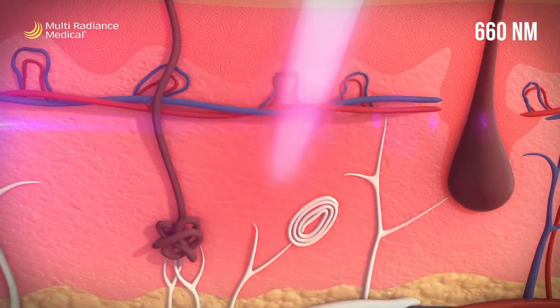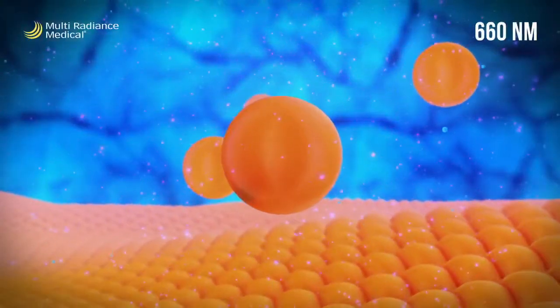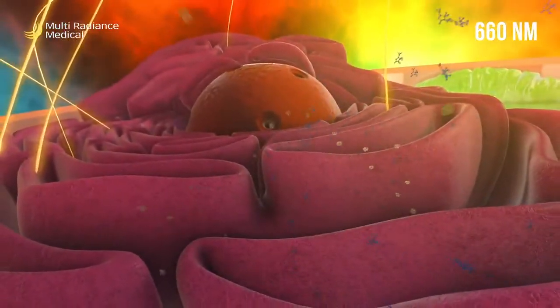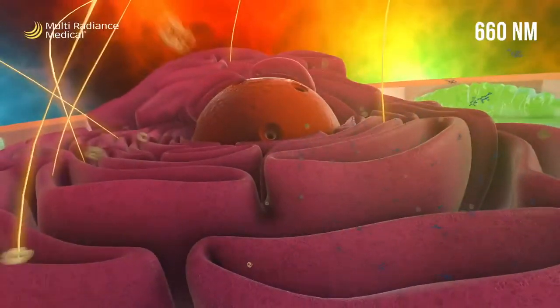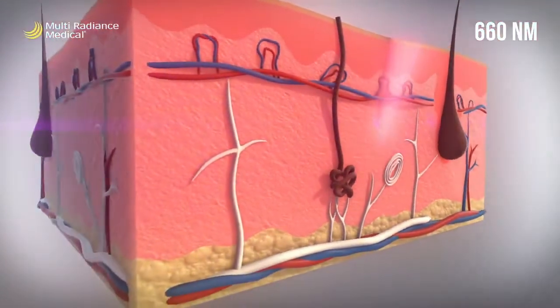The 660 nanometers red light photons penetrate relatively shallow tissue depth, but they are heavily absorbed by cytochrome C oxidase and have higher amounts of energy than infrared photons. Red light exerts a very favorable therapeutic effect on inflammation.